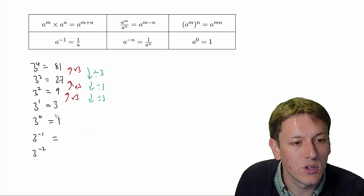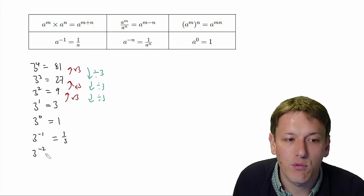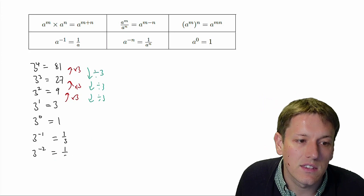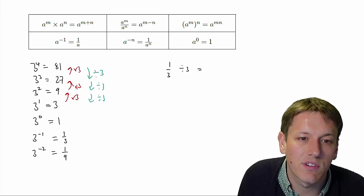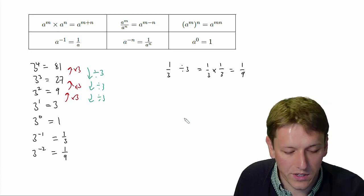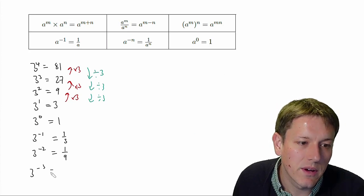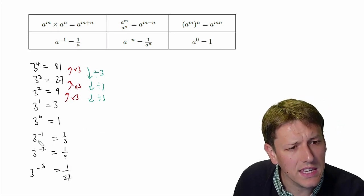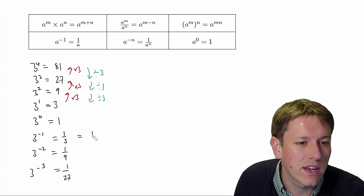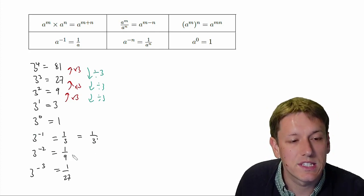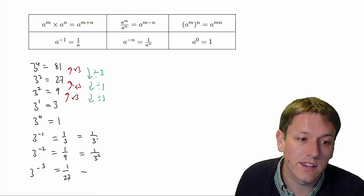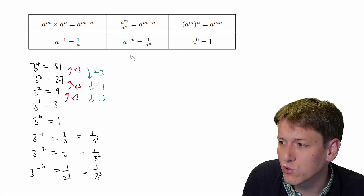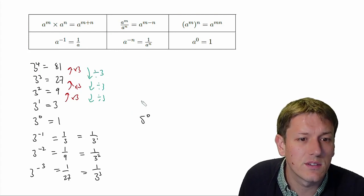So three divided by 3 gives me 1, and that's why three to the power of zero equals 1. Three to the minus 1 would be a third, because that's 1 divided by 3. Three to the power of minus 2 would be a third divided by 3, which is one ninth — a third times a third is one ninth. And three to the minus 3 would be a ninth divided by 3, giving one over 27. So three to the minus 1 is one over 3, three to the minus 2 is one over three squared, and three to the minus 3 is one over three cubed. These rules would be true for any other number.